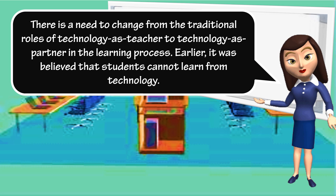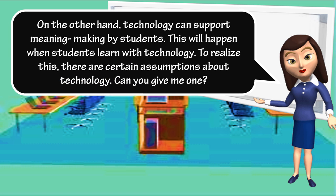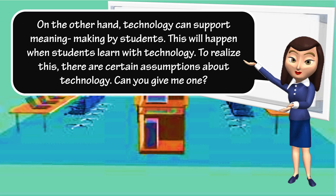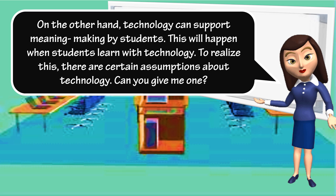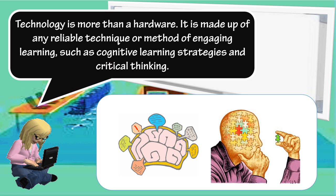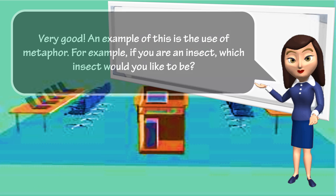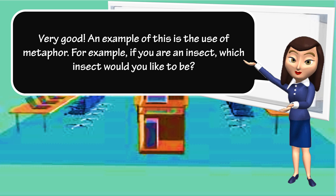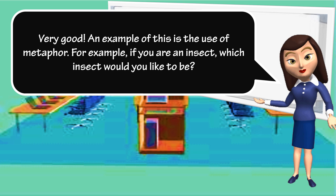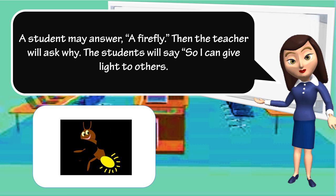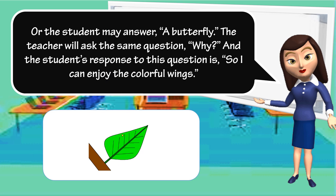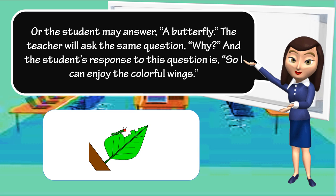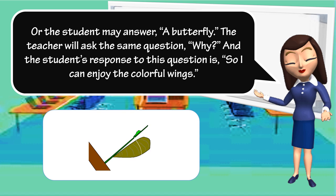Earlier, it was believed that students cannot learn from technology. On the other hand, technology can support meaning-making by students. This will happen when students learn with technology. To realize this, there are certain assumptions about technology. Technology is more than a hardware. It is made up of any reliable technique or method of engaging learning, such as cognitive learning strategies and critical thinking. An example of this is the use of metaphor — if you are an insect, which insect would you like to be? A student may answer a firefly, saying 'so I can give light to others,' or a butterfly, saying 'so I can enjoy the colorful wings.'